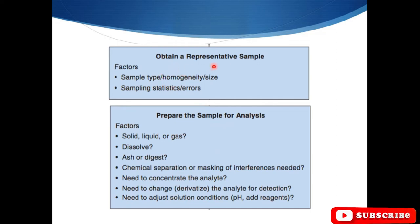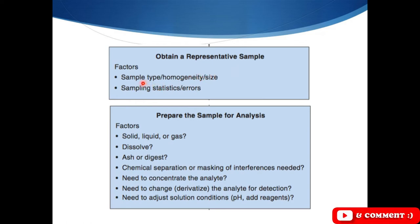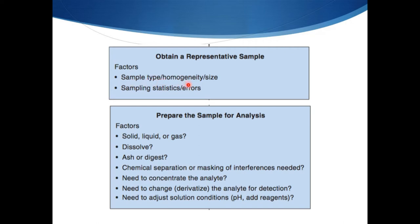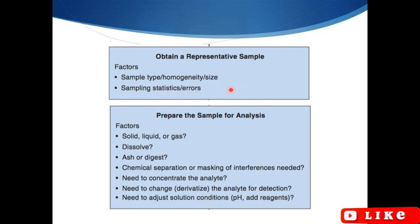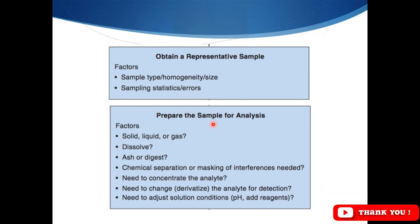Obtaining a representative sample is very, very important. For example, if we have a very large community from which we have to perform experimentation, the sample we select should be representative of that community. We have to consider which type of sample to take — the sample should be homogeneous so that it can represent the whole community. We should also consider the sample size and how much error we can accept.